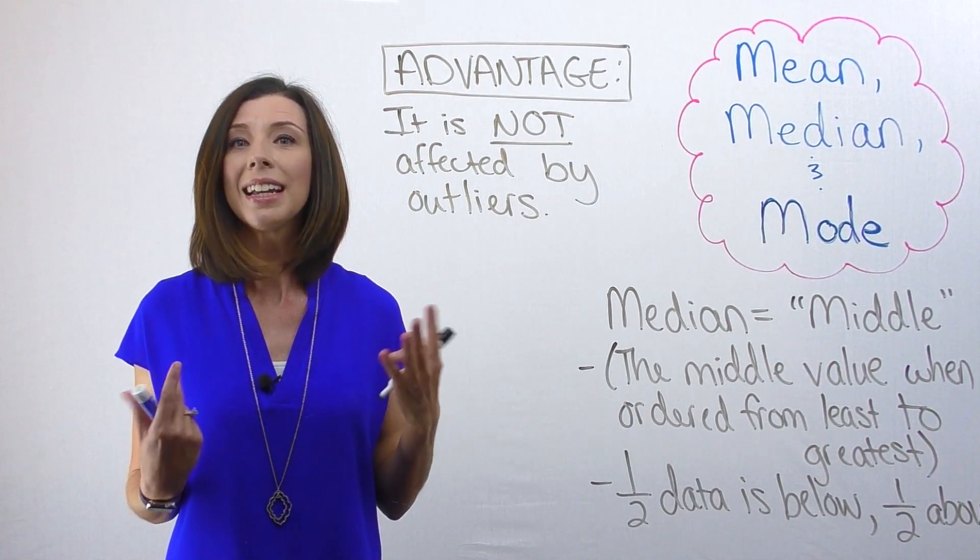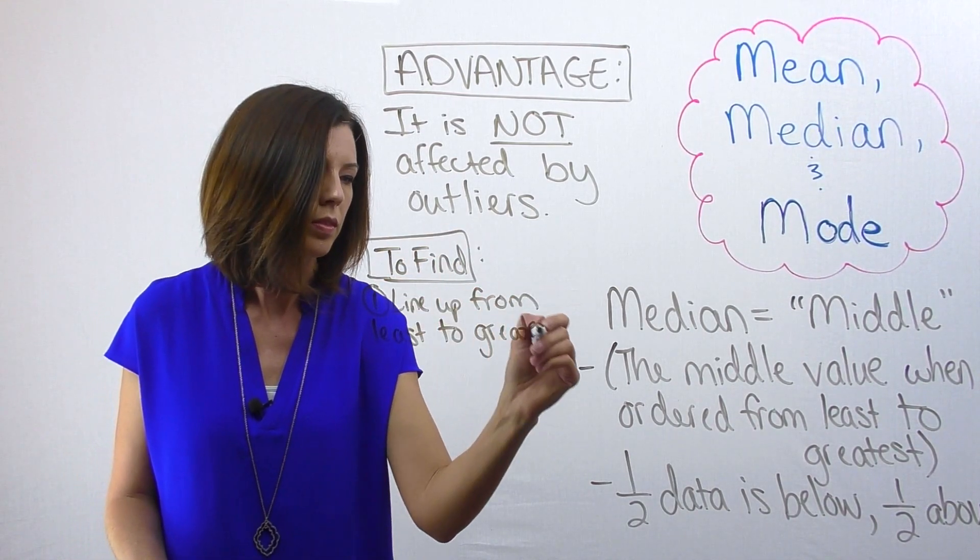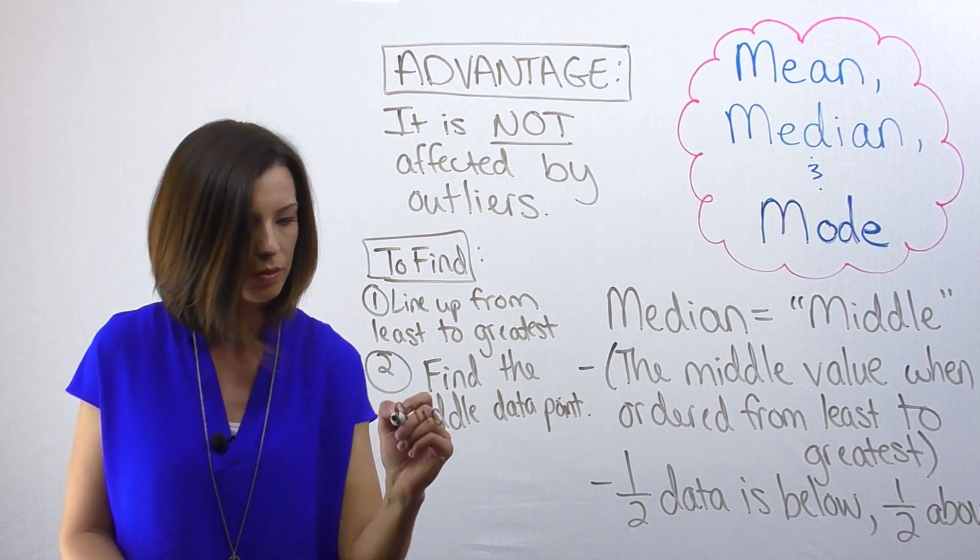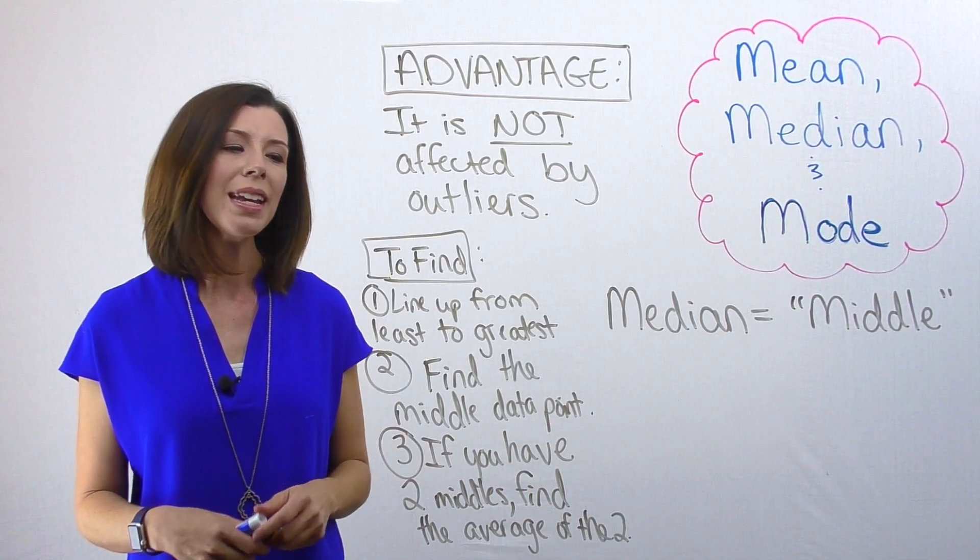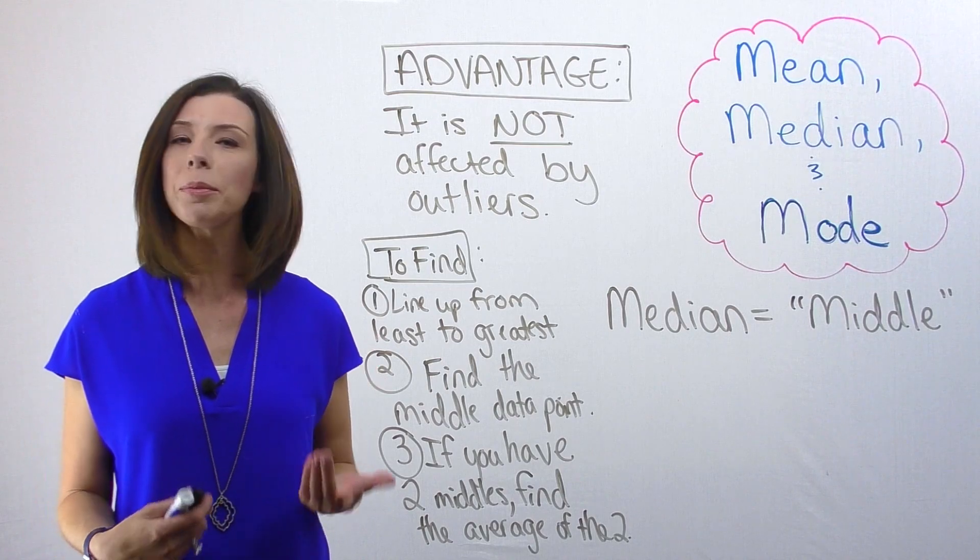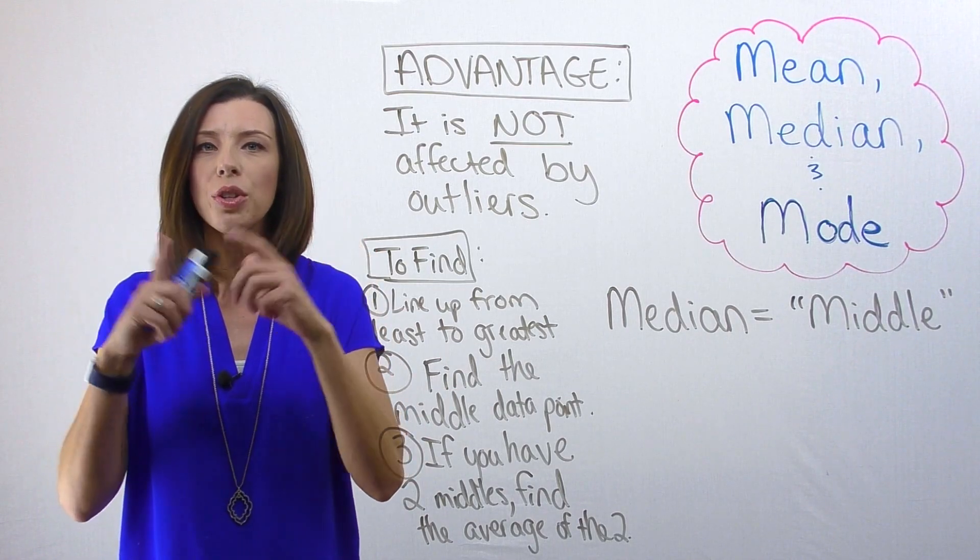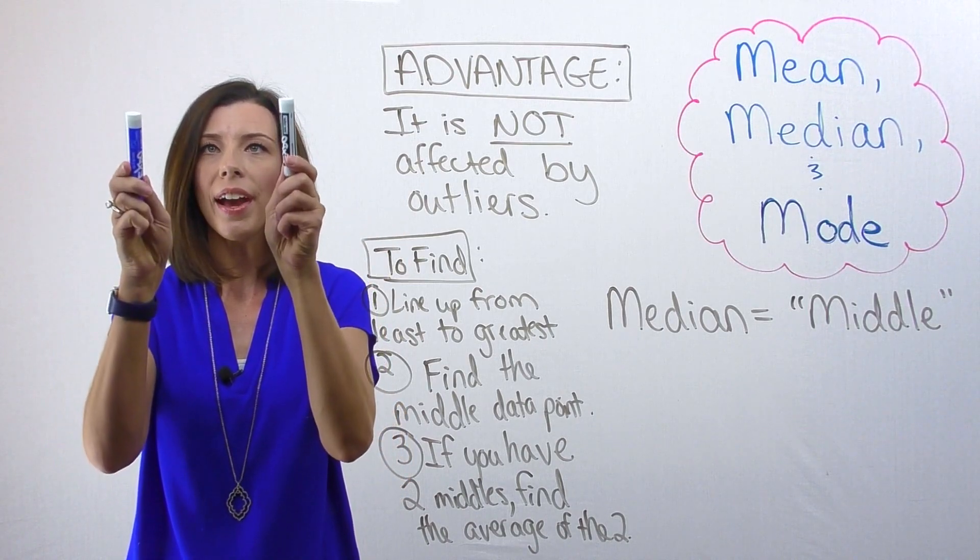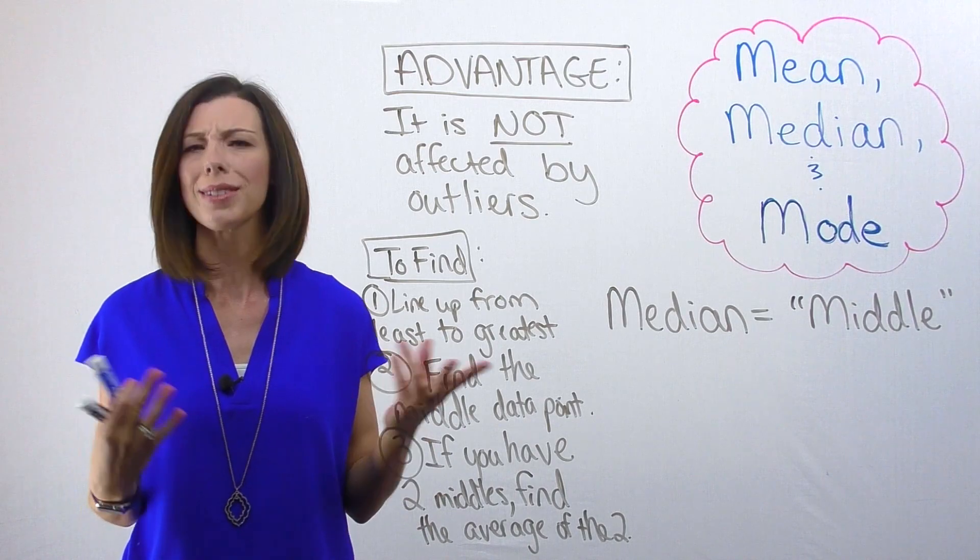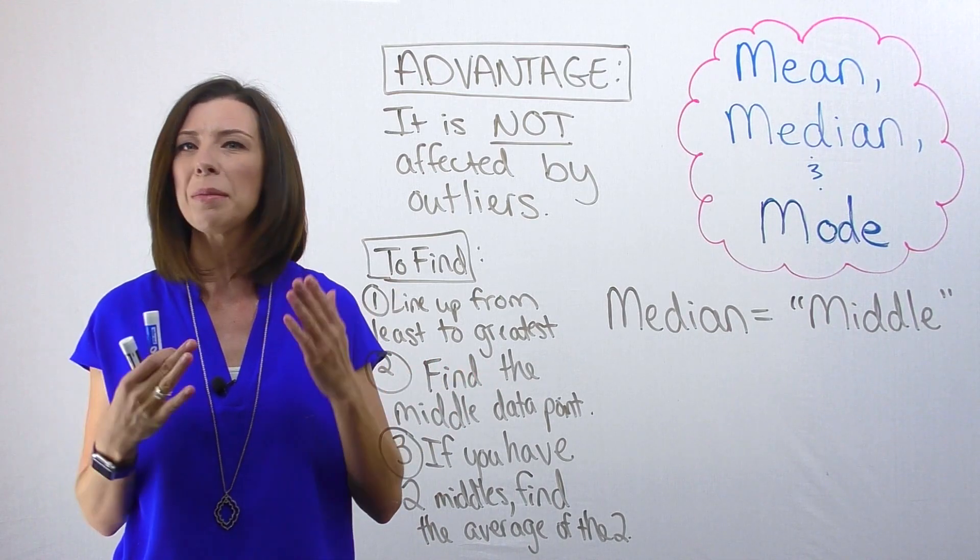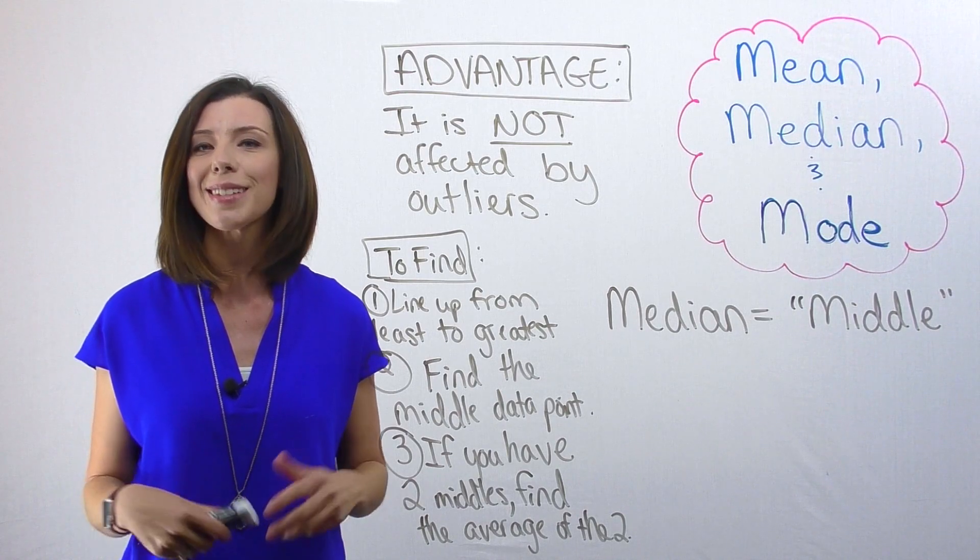Again, to find the median, here's going to be our steps. To find the median, we're literally going to line up our data from least to greatest. Then we're going to find the middle data point. I like to take my two fingers and literally go, okay, what's in the middle? If we have two middle data points, sometimes that happens, then what we're going to do is find the average of the two and that's going to be our median.